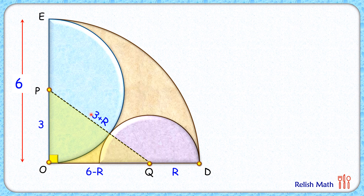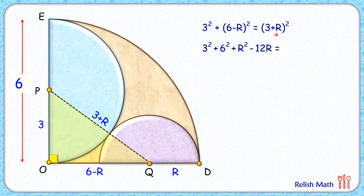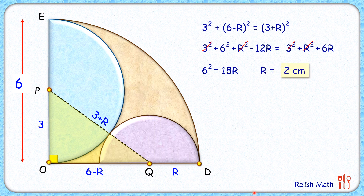Applying the Pythagorean theorem in this triangle, we get: three squared plus (six minus r) squared equals (three plus r) squared. Opening the brackets on both sides and comparing, three squared cancels and r squared also cancels. Simplifying, we get six squared equals 18r, so solving it we get r equals two centimeters. That completes the first part of the solution.